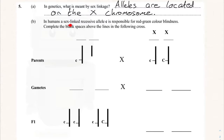Part b reads: in humans, a sex-linked recessive allele, small c, is responsible for red-green color blindness. Complete the blank spaces. We have a double X for the mother and X and Y for the father. Notice the Y chromosome — there's a lowercase c on the X but nothing on the Y. Look at the length: the Y chromosome is actually half the length of the X chromosome, which is why nothing goes on the Y for red-green color blindness and haemophilia.